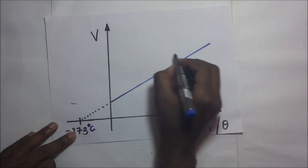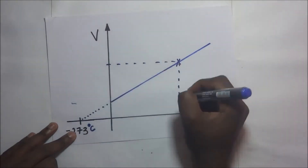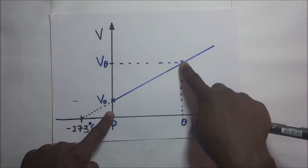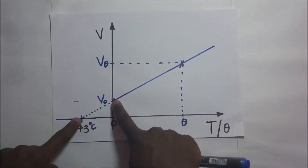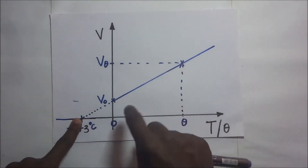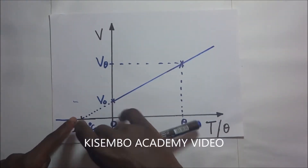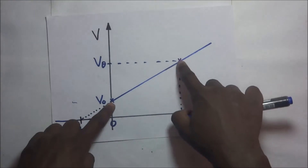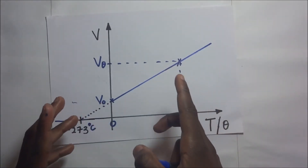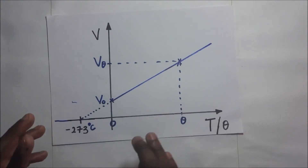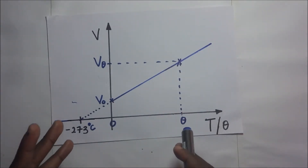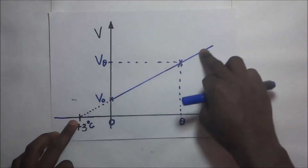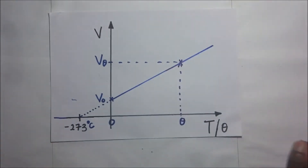Now I will take you through how we find the slope of this graph. To find the slope we can use any two points on the line — either this point and that point, or this point and that point. The slope of this graph is the same regardless of which pair of points we use.